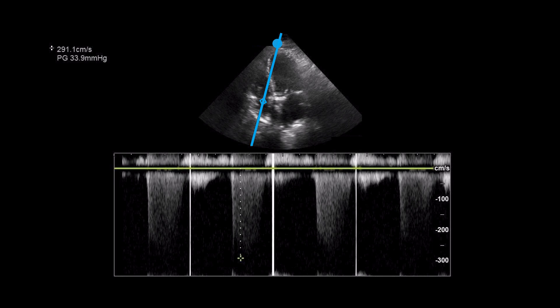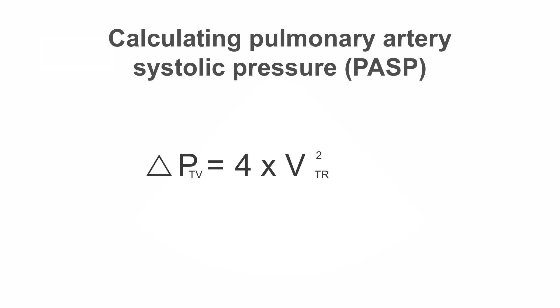We can then measure the velocity of the peak jet using the controls on the ultrasound machine. In this image, you can see the calipers are designating the peak velocity, which is then depicted at the top left of the image. The value in this case is 291 centimeters per second. We can then use this to calculate the pulmonary artery systolic pressure.